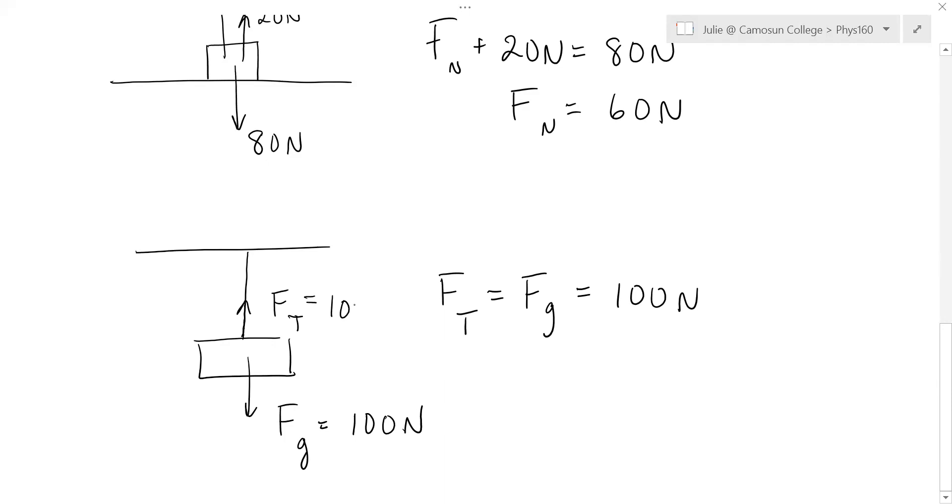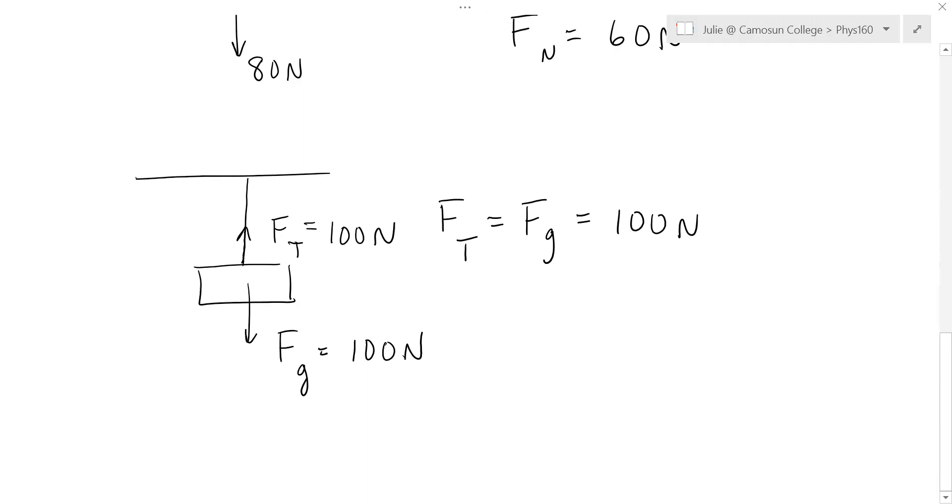Now, once you've established the tension in a string, that's the tension everywhere in the string. And whatever that string is attached to, it's going to be pulling on that object with a tension force of 100 newtons. If we're interested in the box, it's going to be pulling up on the box with a force of 100 newtons. If we happen to be interested in the ceiling, the same string would be pulling down on the ceiling with that exact same force. And we would say the tension in the string is 100 newtons. You would not say the tension is 200 newtons. It's 100 newtons everywhere that string goes.